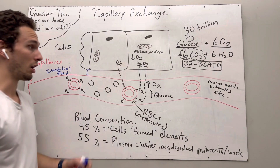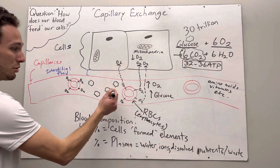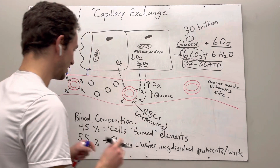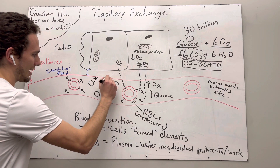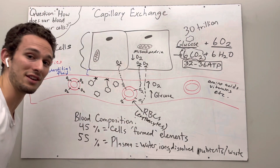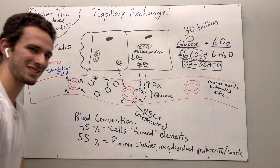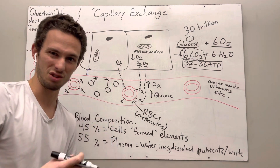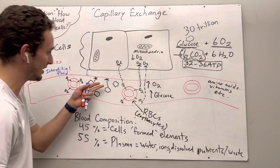Glucose presents a problem. While oxygen has only 2 atoms, glucose has 24 atoms — it's a pretty big molecule. It can't easily diffuse across membranes because glucose is a polar molecule with a slight charge, and cell membranes are made of non-polar lipids. They don't like to mix, so glucose gets blocked at the outside of the capillary bed.